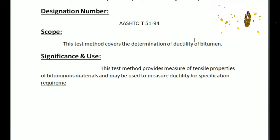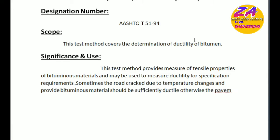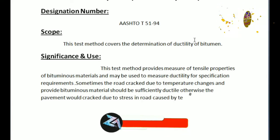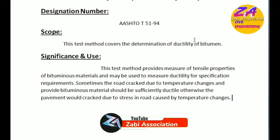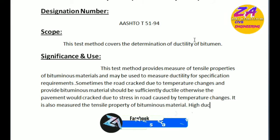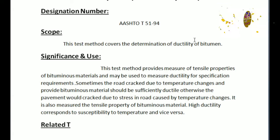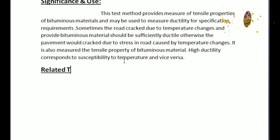It may be used to measure ductility for specification requirements. Sometimes the road cracks due to temperature changes, so bituminous materials should be sufficiently ductile, otherwise the pavement could crack due to stress in the road caused by temperature changes. It also measures the tensile properties of bituminous materials. High ductility corresponds to susceptibility to temperature and vice versa.